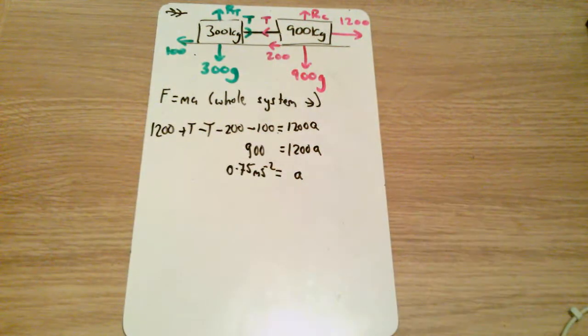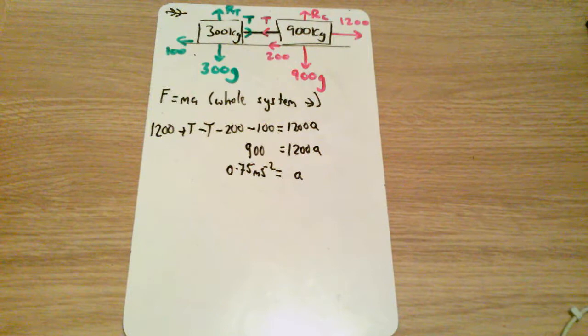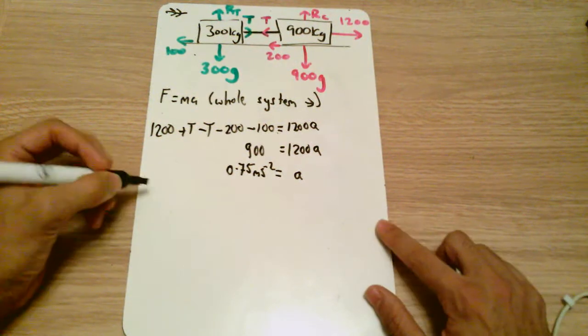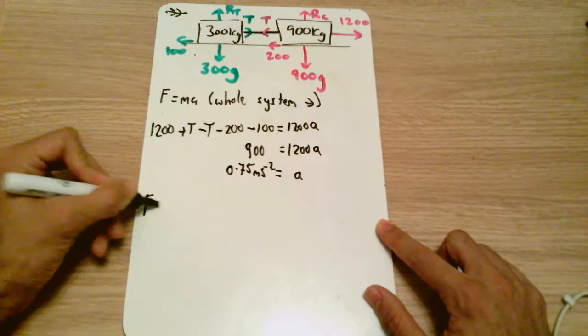So part a there is done finding the acceleration of the system. Part b is always the follow-up to find the magnitude of the tension in the tow bar, and to do this we need to do F equals ma on one of the systems instead.